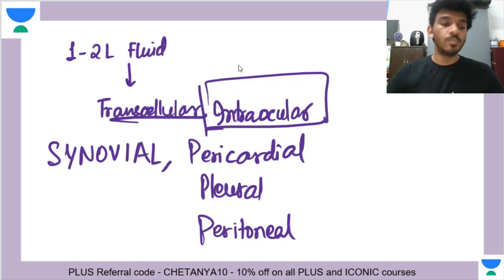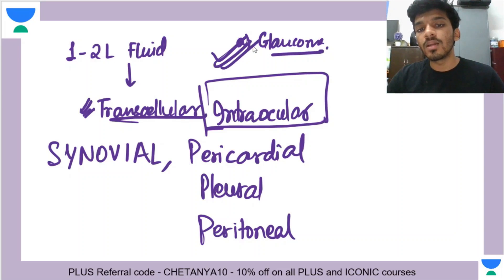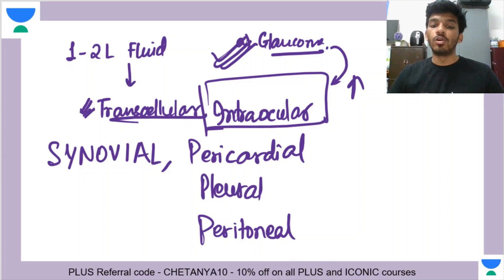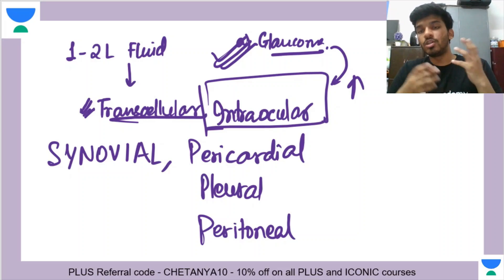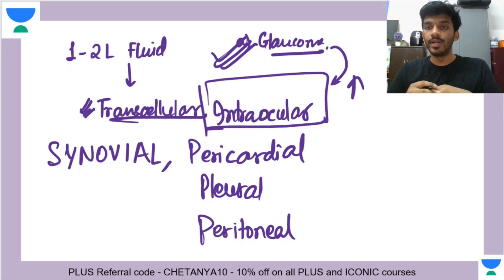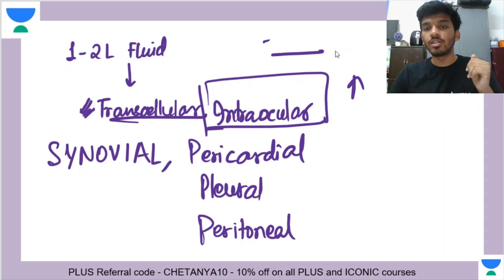A question might be asked: the volume of transcellular fluid increases in which of the following conditions? If glaucoma is one of the options, you can go for glaucoma, because in that condition the amount of intraocular fluid — and therefore intraocular pressure — increases, which correlates to an increased amount of transcellular fluid. This topic can also be integrated with other subjects, which we'll touch on when relevant.